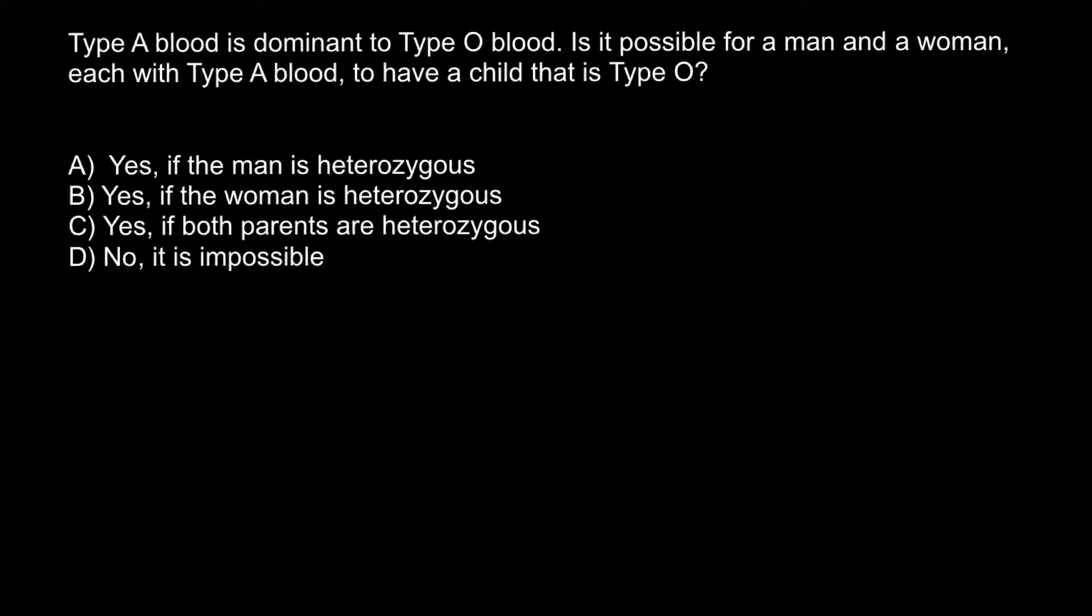Hello and welcome to Nikolai's genetics lessons. Today's video is about the ABO blood group system. Here's a problem: Type A blood is dominant to Type O blood. Is it possible for a man and woman, each with blood type A, to have a child that is Type O?